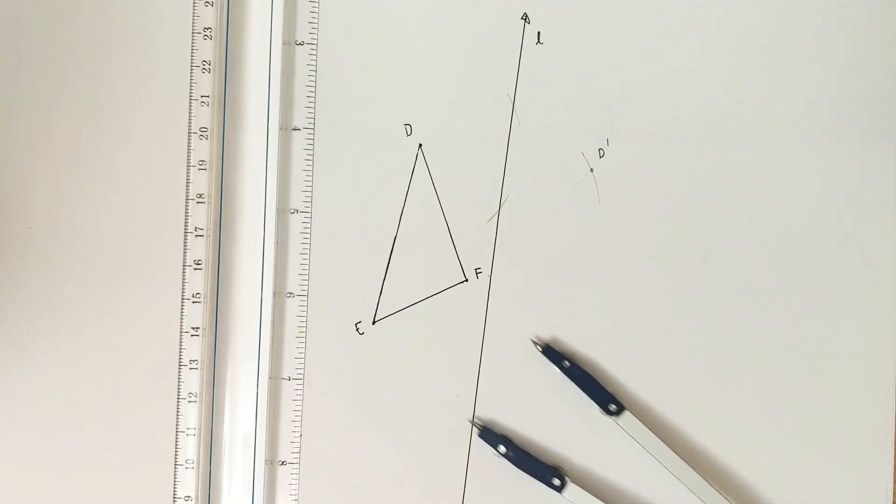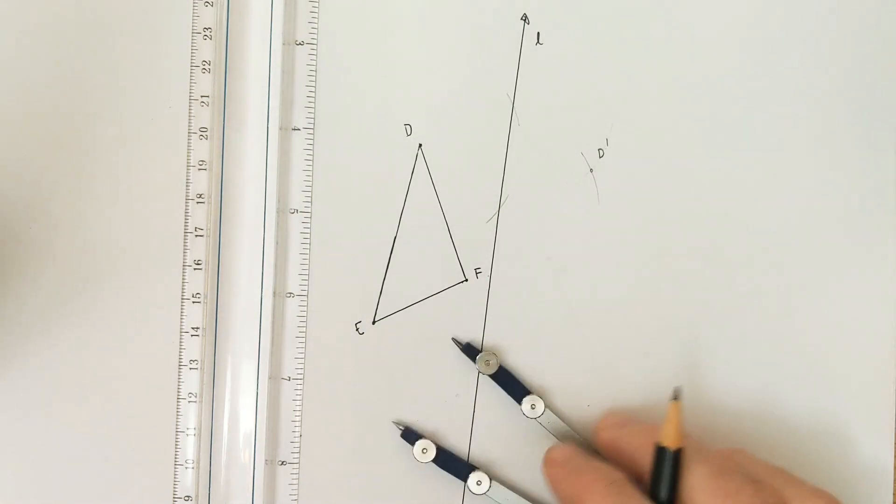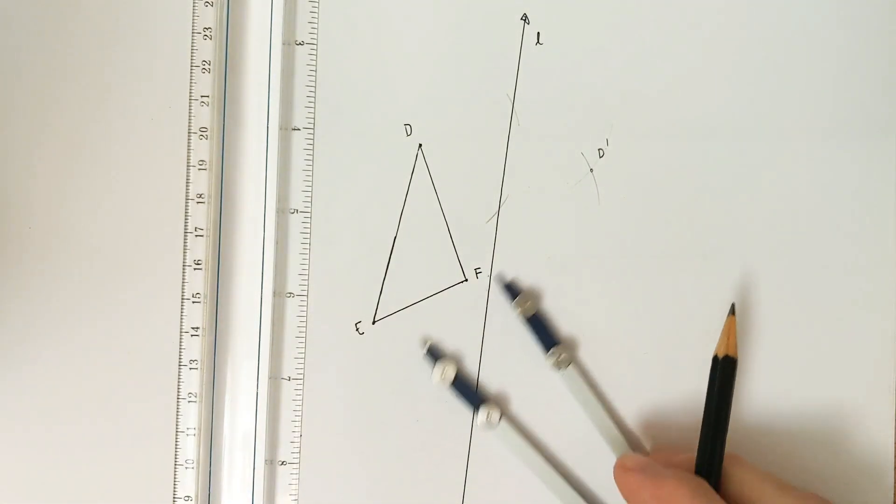This is probably one of the easiest constructions of transformations you'll do with a compass and straight edge. You're really drawing four circles, four parts of circles all of the same radius.